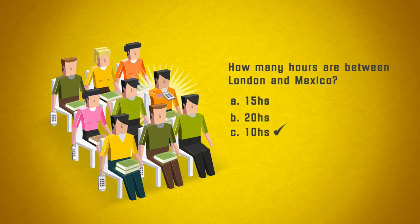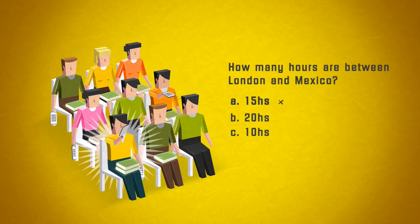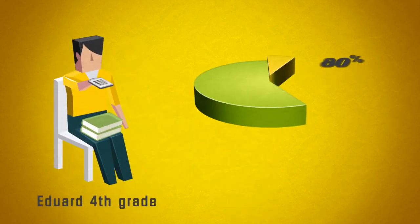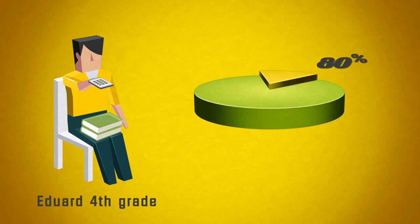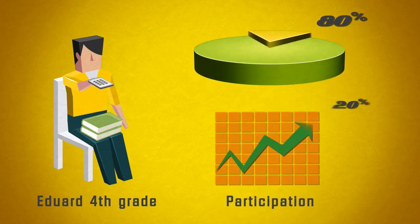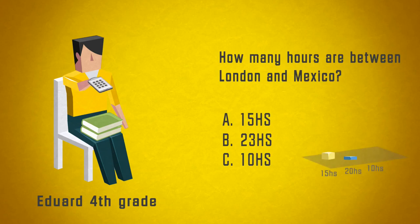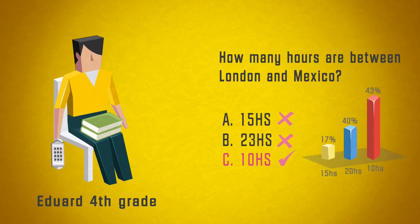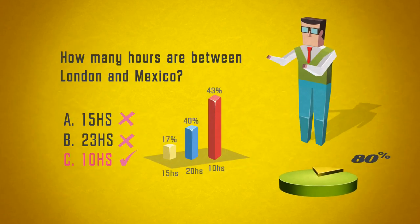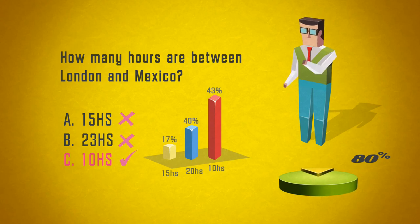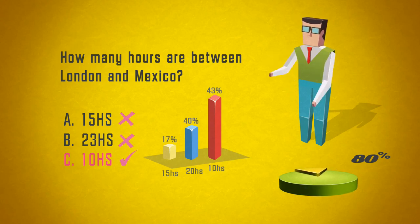Students are able to participate in class anonymously among their peers, but can be uniquely identified to monitor progress, perform assessments, and track participation. As students participate, they gain immediate feedback, and instructors can assess comprehension instantly to facilitate better understanding and learning.